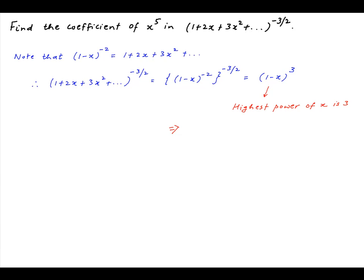And therefore there is no term in the given expression containing x raised to the power 5. Therefore the coefficient of x raised to the power 5 in the given expression is equal to 0, which is the desired answer.